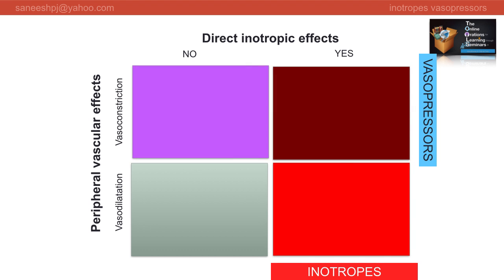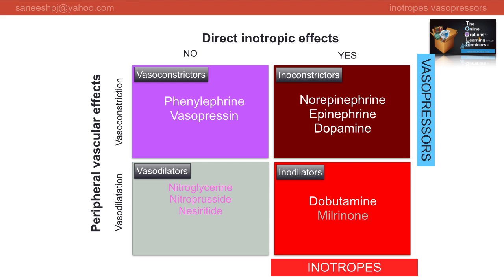Now let us see the crossover by both classifications. Inotropes with vasopressor action are called inoconstrictors - examples being norepinephrine, epinephrine, and dopamine. Inotropes with vasodilation action are inodilators - like dobutamine and milrinone. Vasopressors with no positive direct inotropic effects are vasoconstrictors - like phenylephrine and vasopressin. Remember they can produce indirect cardiac effects due to sympathetic reflexes. The last category, vasodilators, are those without any positive direct inotropic effects that mainly reduce systemic vascular resistance.